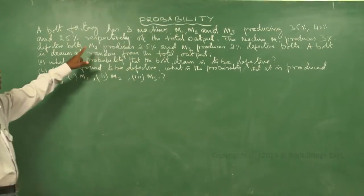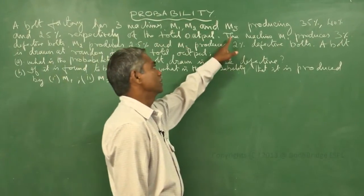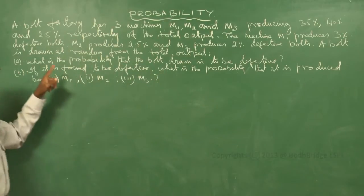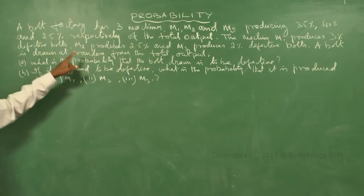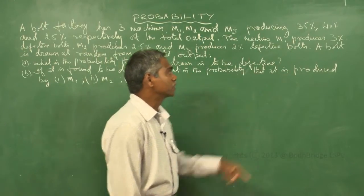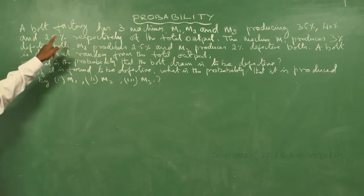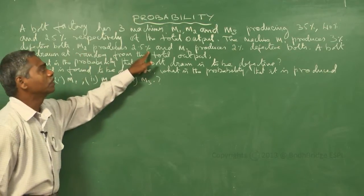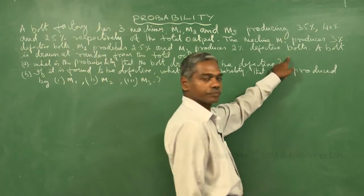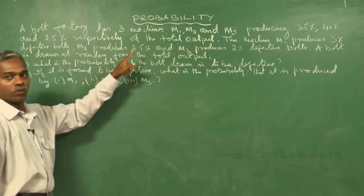A bolt factory has 3 machines M1, M2, and M3 producing 35%, 40%, and 25% respectively of the total output. Machine M1 produces 3% defective bolts, M2 produces 2.5%, and M3 produces 2% defective bolts. A bolt is drawn at random from the total output.